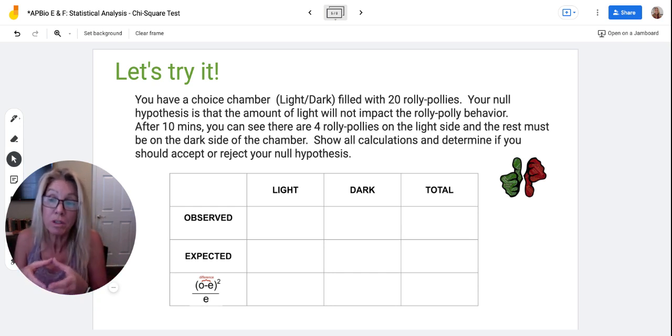And so you're assuming, because you can see that there are four there, there must be 16 that are on the dark side. And you're wondering, is this statistically significant, this difference? Because I expected 10 and 10, but I got four and 16.